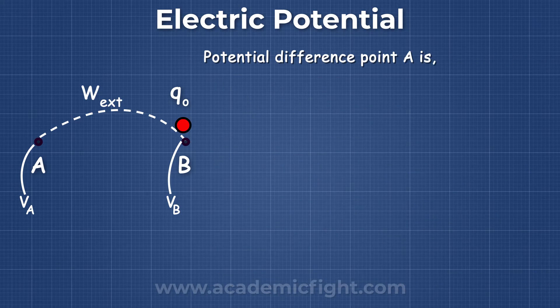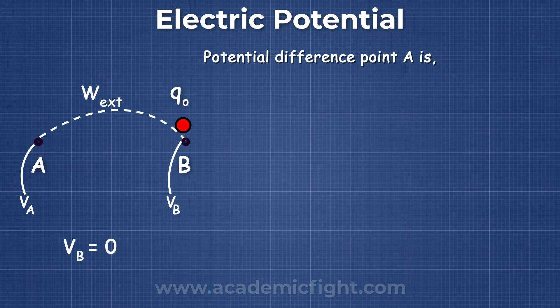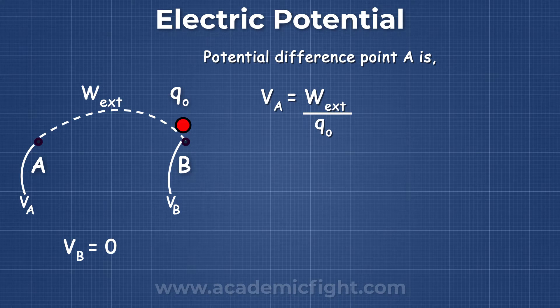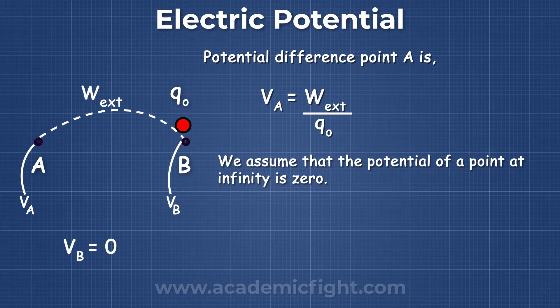Now let's say, somehow the potential of point B becomes zero. So now the equation becomes VA is equal to work done divided by Q0. Now, in physics, we assume that the potential of a point at infinity is zero. Therefore, point B is at infinity.